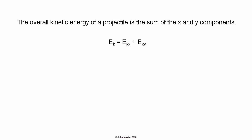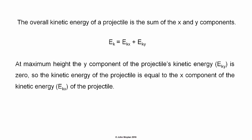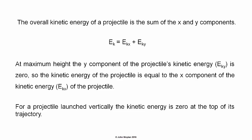Kinetic energy is a scalar, so the total kinetic energy of the projectile is simply equal to the sum of the X and Y components of the kinetic energy. At maximum height, the Y component of the projectile's kinetic energy, E subscript KY, is zero, so the kinetic energy of the projectile is equal to the X component of kinetic energy, E subscript KX. For a projectile launched vertically, the X component is zero, so the kinetic energy is zero at the top of its trajectory.